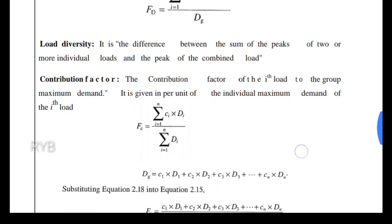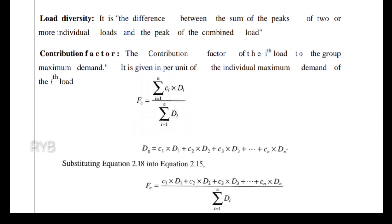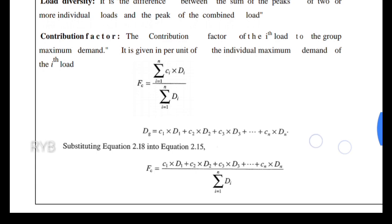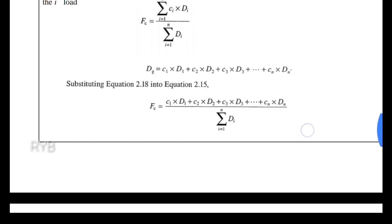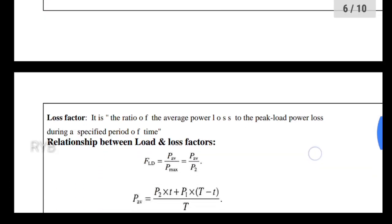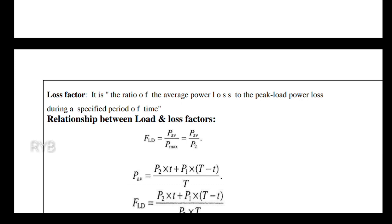The contribution factor for the i-th load of the group maximum demand is given as the per-unit individual maximum demand of the i-th load — it is the reciprocal of the diversity factor. The contribution factor Fc is given by: group maximum demand divided by the sum of individual maximum demands.